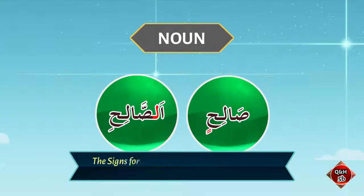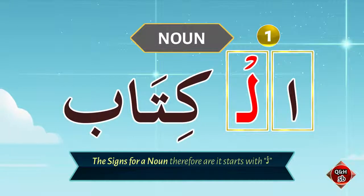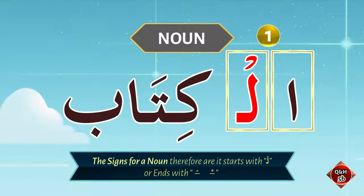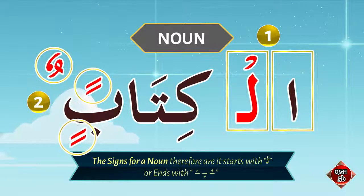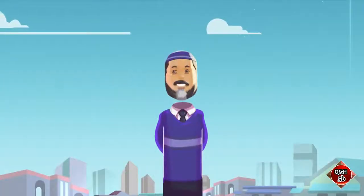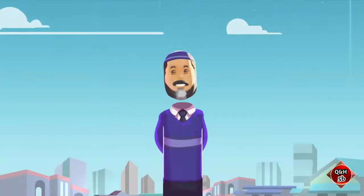The signs for a noun therefore are: it starts with 'al' — for example, al kitab — or it ends with 'un,' 'an,' or 'in,' like kitabun, kitaban, or kitabin. That's it for now. Jazakumullah khair. Wassalamualaikum warahmatullahi wabarakatuh.